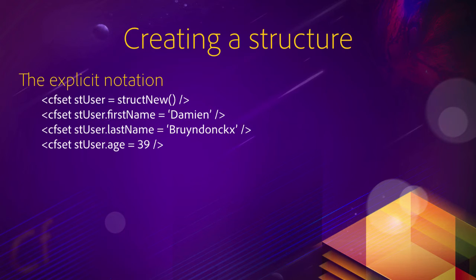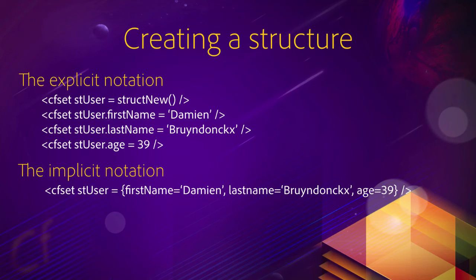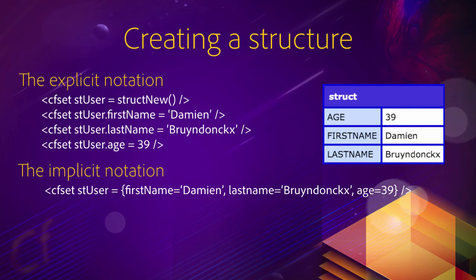The second way of creating a structure is called the implicit notation. In that notation, we use a single cfset statement to create the structure. We use curly braces to symbolize the structure, and inside of those curly braces we have the three key-value pairs separated by a comma. If you use cfdump to dump that stuser structure on the screen, you will have that result - the image that just appeared on the screen - a single structure that contains all three pieces of information.